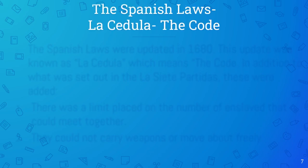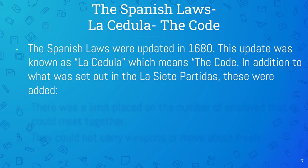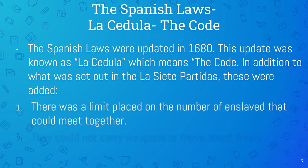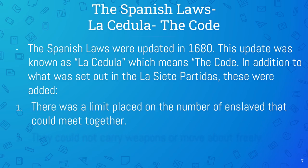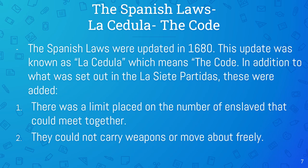There were actually two Spanish slave laws — Las Siete Partidas and its update known as La Cédula, meaning 'the code.' The Spanish laws were updated in 1680. In addition to what was already in Las Siete Partidas, the added laws included: a limit on the number of enslaved who could meet together, they could not carry weapons or move about freely, and those under the age of 17 were not required to work.